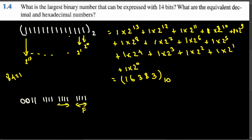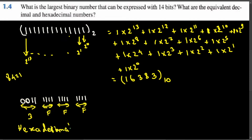So the three full groups of 1111 each give us F, F, F. For the remaining group of two ones with two leading zeros, we have 2 plus 1 equals 3. So the hexadecimal equivalent of this binary number is 3FFF base 16. That's how we solve this problem. I hope you find this video helpful — thanks for watching, and don't forget to subscribe!